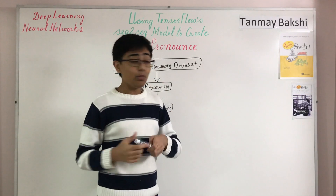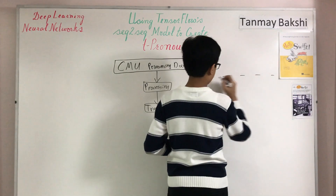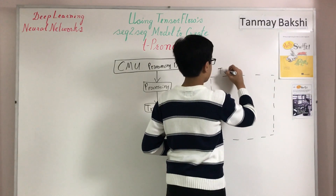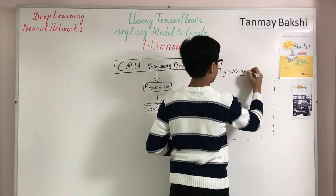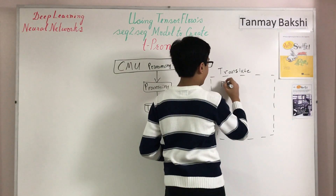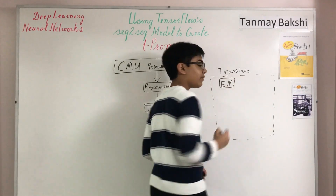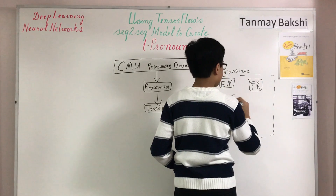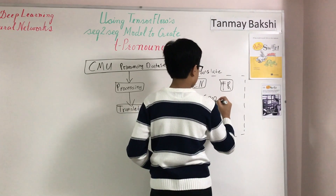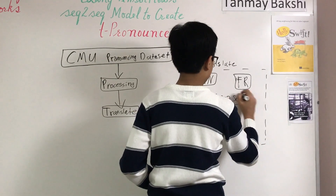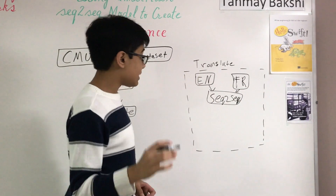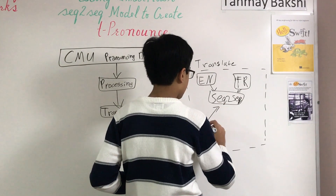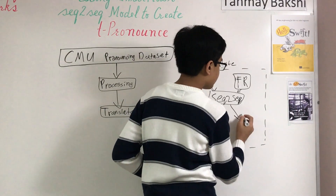Here is how it works. By default, this model takes a bunch of text in English and that exact same text but in French, and feeds it into a sequence-to-sequence model. The sequence-to-sequence model then trains on that data, and you can pass it input like 'hello' and it will output something like 'bonjour'.